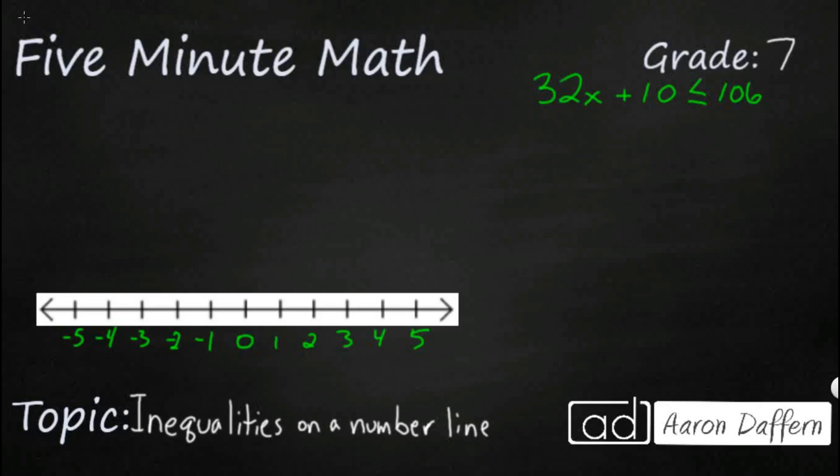Hello, and welcome to 5-Minute Math. Today we are looking at the 7th grade concept of inequalities, specifically how we can write inequalities on a number line, and we will do it in 5 minutes or less. So we have a basic number line here, and we have a pretty simple inequality up at the top: 32x plus 10 is less than or equal to 106.